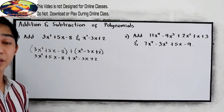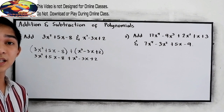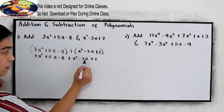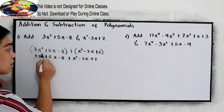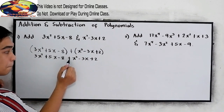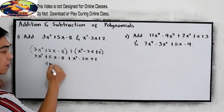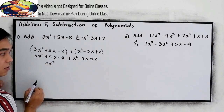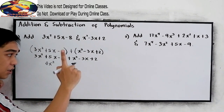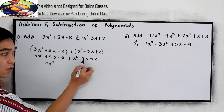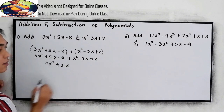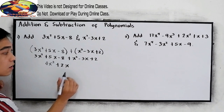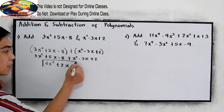Now combine like terms. We can only combine if they have the same exponent and variable. We have x squared and x squared — we can combine them because the exponent is 2 and the variable is x. So 3 plus 1 gives us 4x squared. Same thing, 5x minus 3x: degree 1, x and x, we can combine them — that is positive 2x. And for the constants, negative 8 plus positive 2, that is negative 6. This will be our answer.